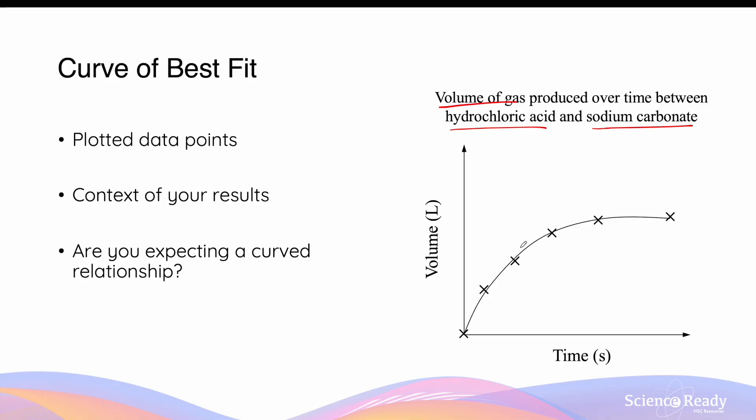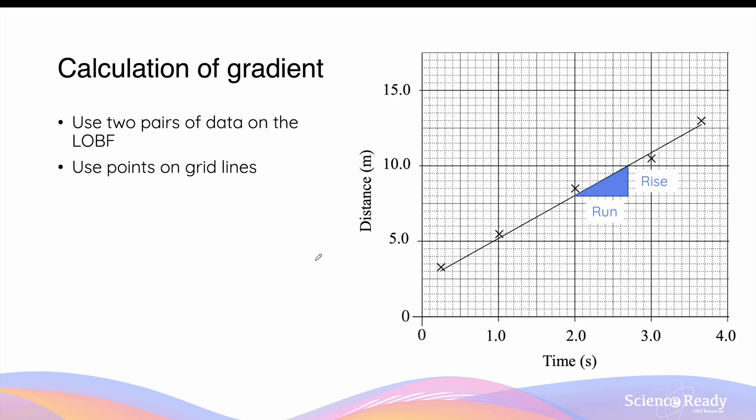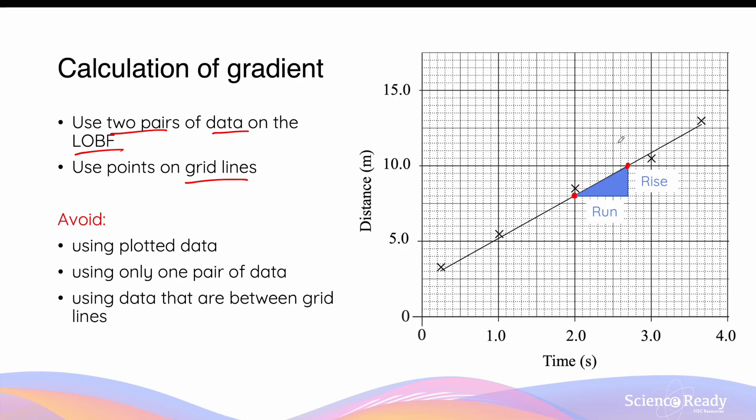For straight lines of best fit, the experimental results can be further analyzed by calculating its gradient, that is its slope. The gradient should be calculated using two pairs of data on the line of best fit. And you should select the two pairs of data that are on grid lines, and these tend to be more accurate. So here, on this line of best fit, I've decided to pick these two data points, as they clearly intersect the grid lines on my graph. When calculating the gradient, you should avoid using the plotted data by themselves, and avoid using only one pair of data. The reason why we are using data on the line of best fit, because this accounts for all the data points you've gathered in the experiment, and therefore the results that you calculate is far more accurate than using the raw data points themselves. In other words, instead of using these crosses to calculate the gradient, we are using variable points on my straight line to calculate the gradient. This will produce more accurate results.